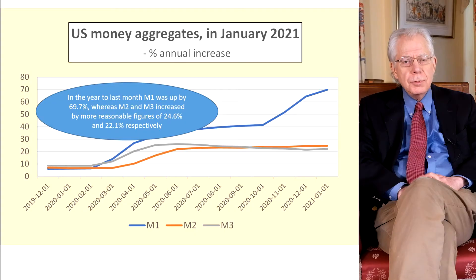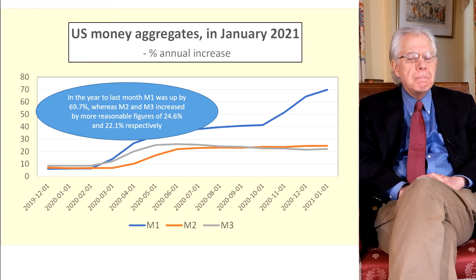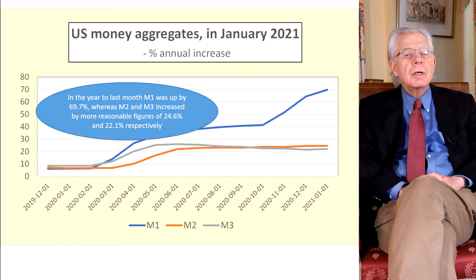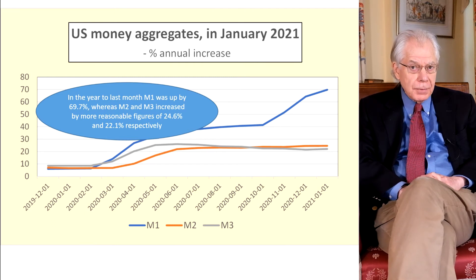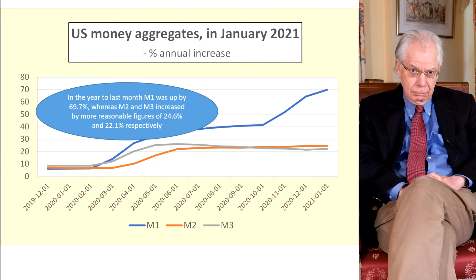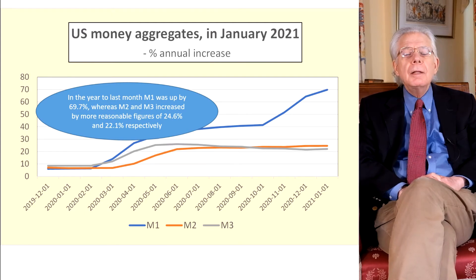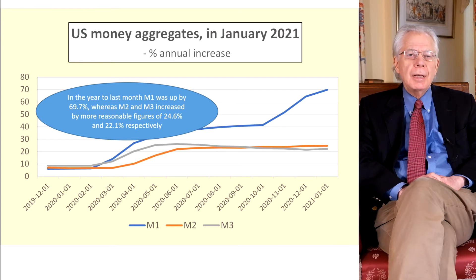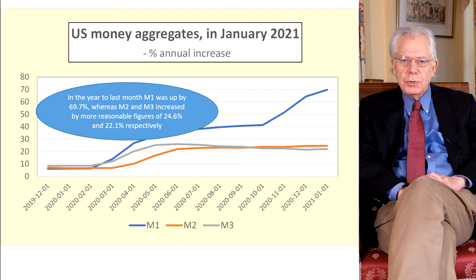They're also different in behaviour. This shows you the growth rates of money in the last year — year to January. You can see that M1 has risen by the rather extraordinary figure of getting on to 70 percent. Then you've got the measures of M2 and M3: M2 up by a bit over 25 percent and M3 22 percent. Now which of these three measures is the right one?